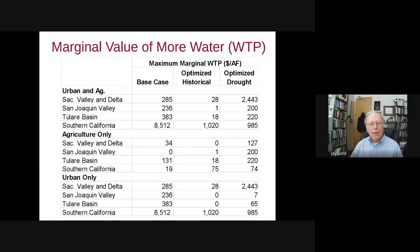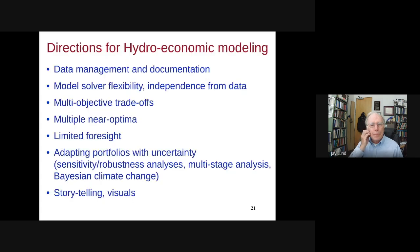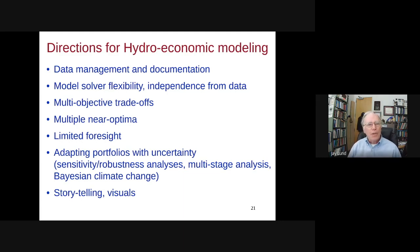With the drought and much drier conditions, the marginal values of water in different regions go up quite a bit from the optimized historical case. That gives you an example of the kinds of studies we can do with this kind of modeling.